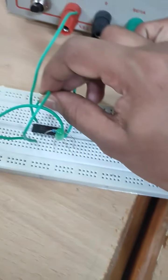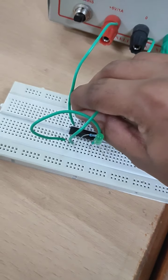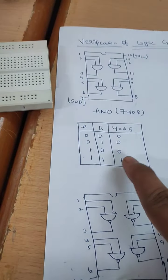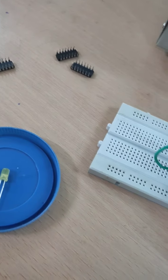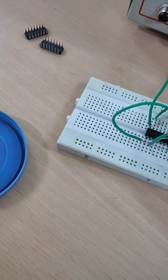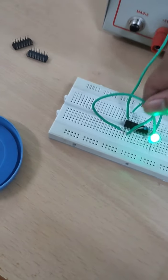This one is 0 and input 2 is 1. Output will be 0. For example, the another input, input 1 is connected to...